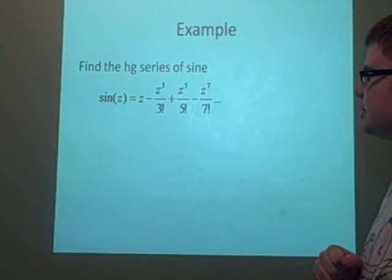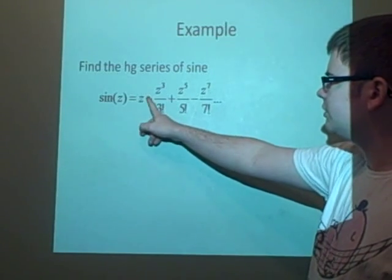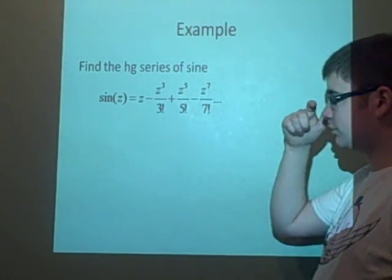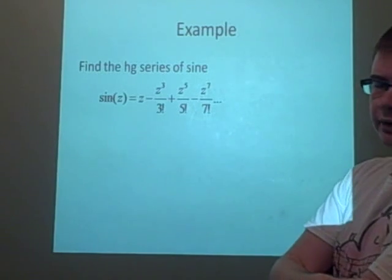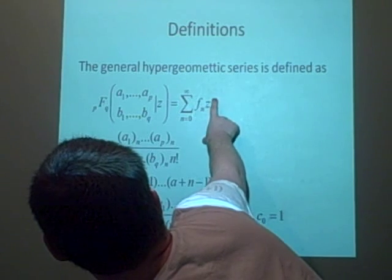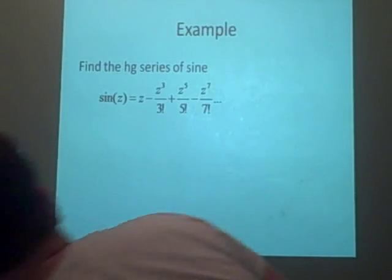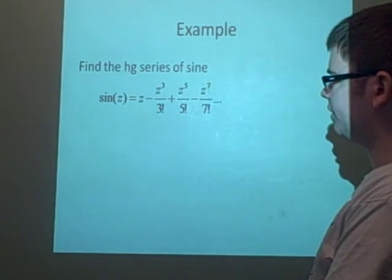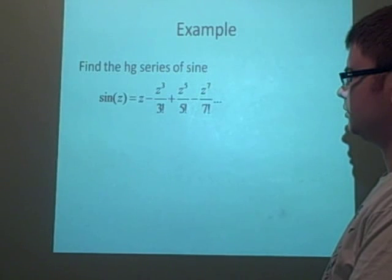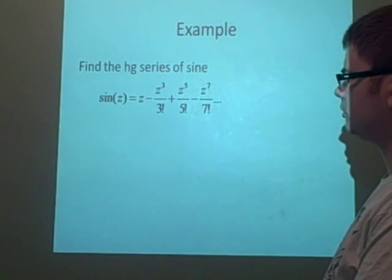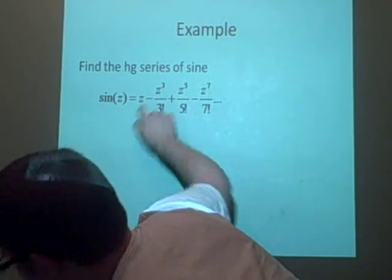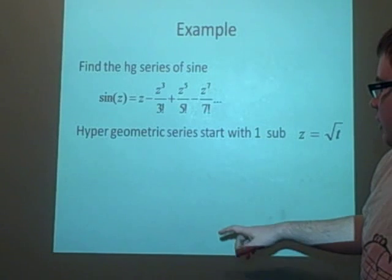We want to find the hypergeometric series of sine. Now the Taylor series for sine is z minus z³ over 3 factorial plus z⁵ over 5 factorial minus z⁷ over 7 factorial. We always want to start these beginning with a 1, because when we're summing, we have n equals 0, this will always be the value 1, so we can't start with a z. So what we're going to do first is divide by z. If we divide this entire thing by z, then that will go to 1.